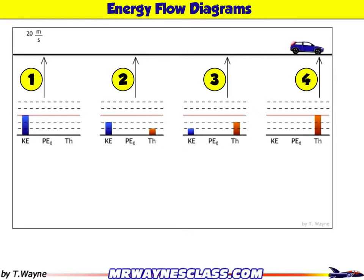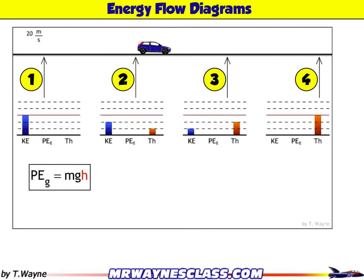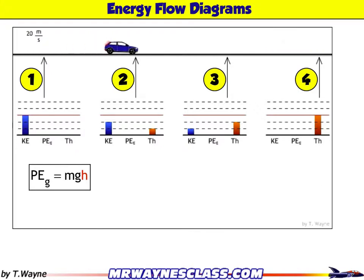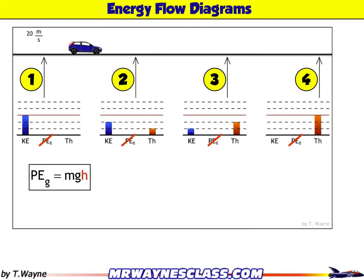Looking at the energies first: I've got potential energy due to gravity, but there's no height change for the car. Since there's no height change, there's no energy exchange with the Earth, so I'm not going to consider that at all. The gravitational PE goes away completely — no potential energy due to gravity for the car.